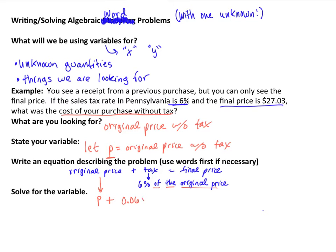6% of the original price. So 6% of, we typically associate with multiplication, of the original price, well, that was our value of P. That's our unknown quantity. Equal to the final price, and if I look up above, I see the final price is $27.03. I now have an equation where I have P plus 0.06P equal to $27.03. This is a one variable equation that I can solve using my properties of equality.